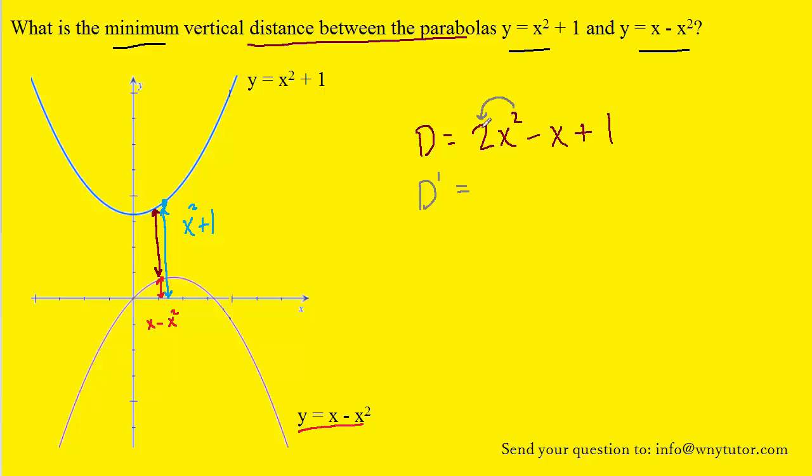So we will pull down that 2 and multiply it by the coefficient of 2 to make 4x. We'll subtract 1 from the exponent to make it x to the first. The derivative of minus x is just going to be a minus 1 since there's a coefficient of minus 1 there. And then since plus 1 is a constant, its derivative will be 0.